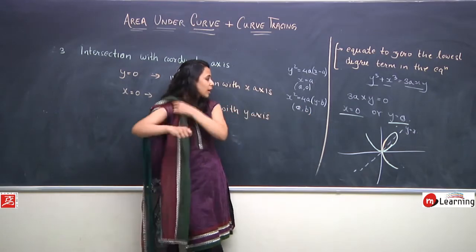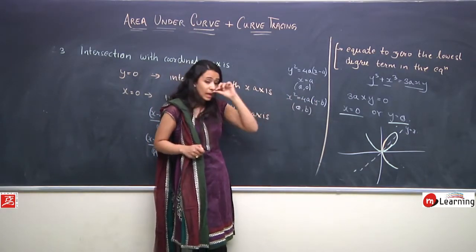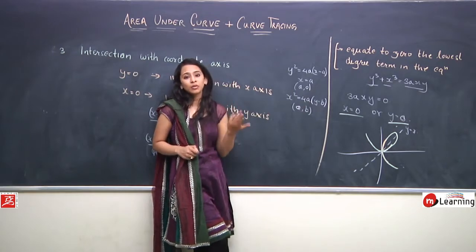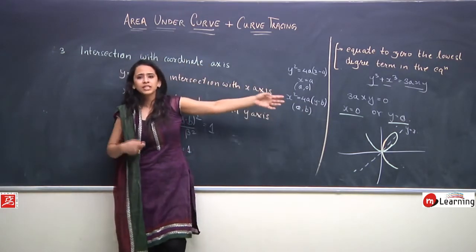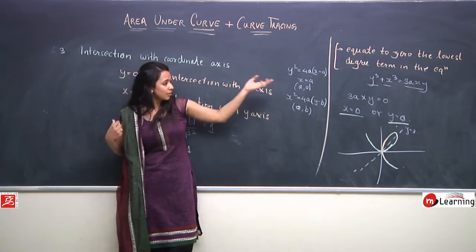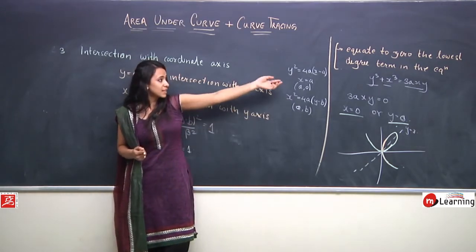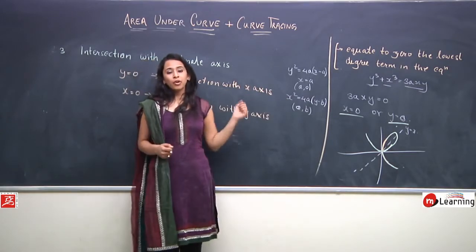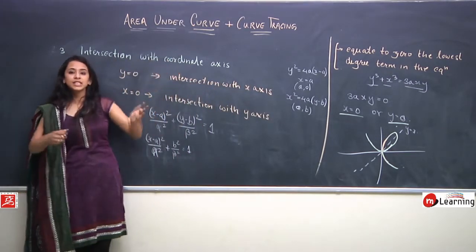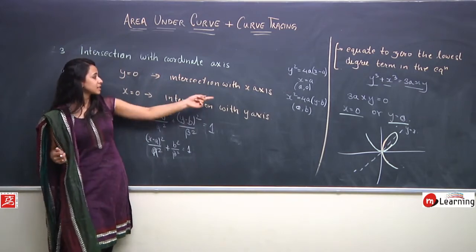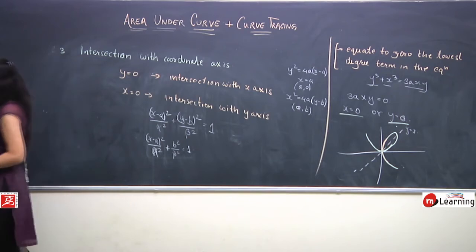Similarly, putting y = 0 in x² = 4a(y - b) gives x² = -4ab, which is not possible since x² cannot be negative. So if the substitution yields an impossible condition, the curve does not intersect that axis. To summarize: put y = 0 for x-axis intersection, put x = 0 for y-axis intersection.